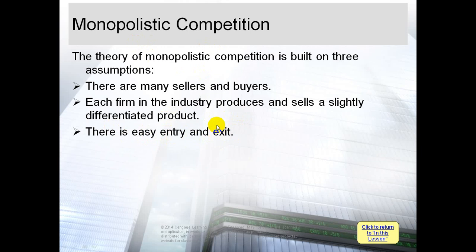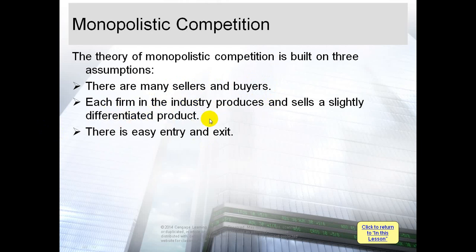A good example of perfect competition is vegetables. But the best example for monopolistic competition is restaurants. Are there many sellers and buyers in Yemen for restaurants? Yes, we have a lot of restaurants and a lot of customers. Each firm in the industry produces and sells a slightly differentiated product — yes, this applies to restaurants.